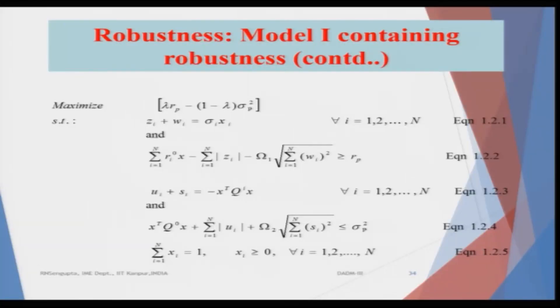Once you have the perturbation based on the less-than or greater-than type, I will give only the essence of the models. We have the same maximization problem where we give a weight lambda to the return of the portfolio and one minus lambda to the variance, trying to maximize that. The perturbation sets are based on the returns being greater than or equal to some R_p or R_p* and the variance being less than or equal to some σ²_P or σ²_P*.